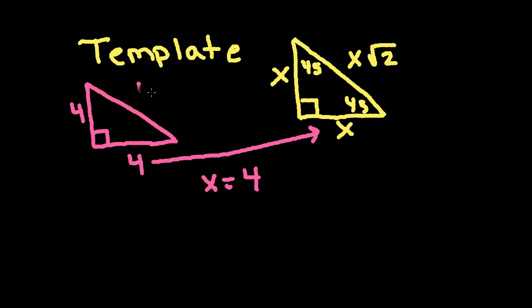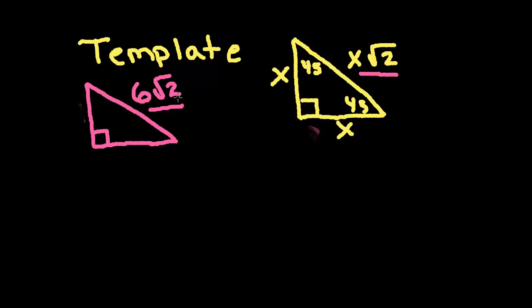So, let's try another one. Let's say this time I have 6 square root 2. Well, you can see here, just by looking at the pattern, that if the hypotenuse is given and it's a number with a square root 2 on the end, then that number, obviously, must be the value of x. So 6 square root 2 is equal to x square root 2.